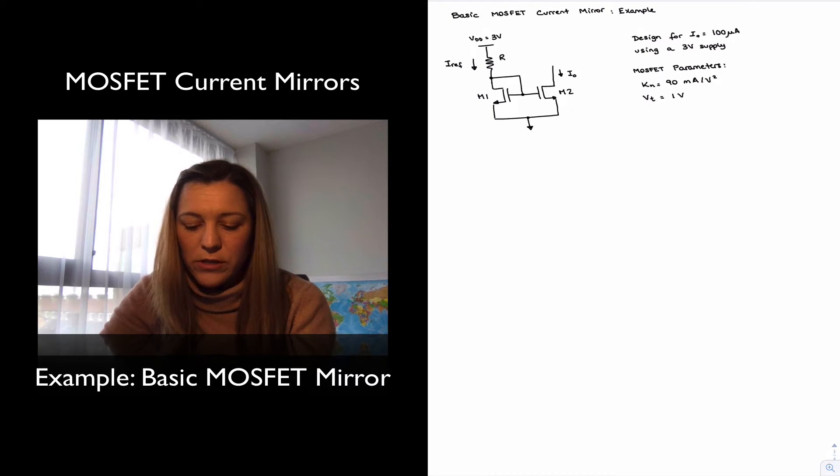In this particular case, instead of a reference current source IRF, I've actually implemented that with a resistor. So resistor R basically implements that reference current source, which the reference current then flows through M1 and gets mirrored into M2.